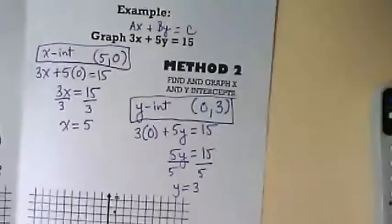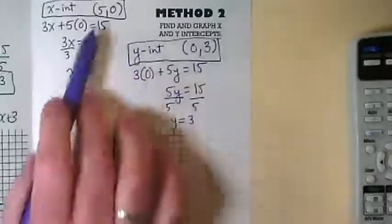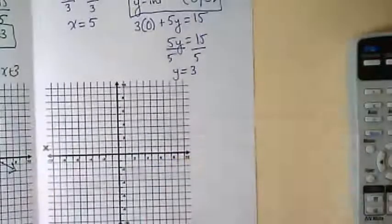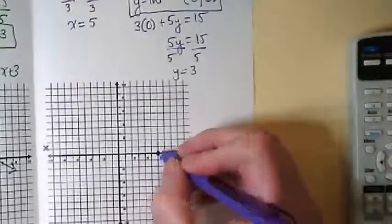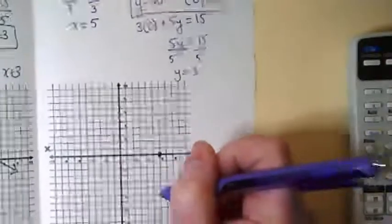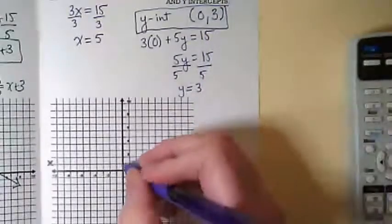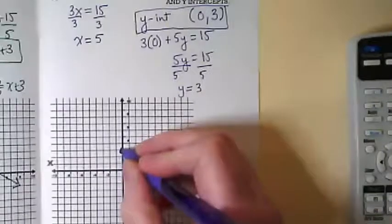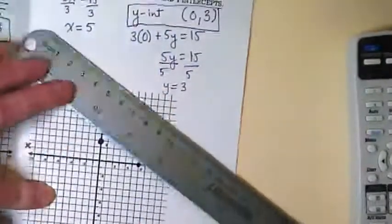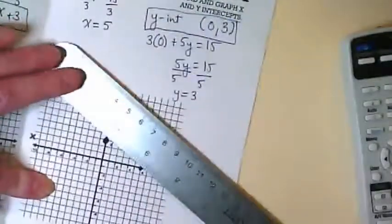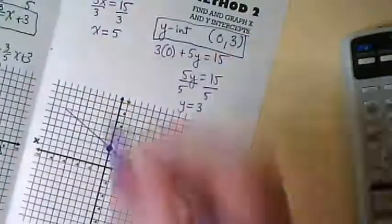So now let's go down and graph this. Again, we just need two points on the graph, and we can connect the dots. Our first point is 5, 0. Our second point is 0, 3. And then we can take our straight edge and draw our line.